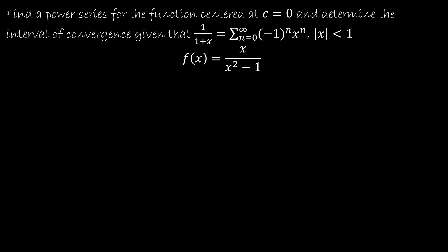Let's do one last example — very similar to what we just did. If you're feeling up for a challenge, try it on your own; otherwise, I'll take you through it step by step. Hopefully the first thing that popped out is that x² − 1 can be written as (x + 1)(x − 1), which tells me I'm going to have a partial fractions question again. I'll put A over (x + 1) and B over (x − 1) and solve.